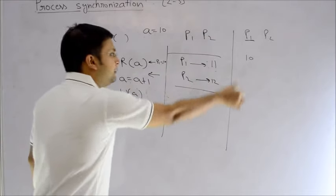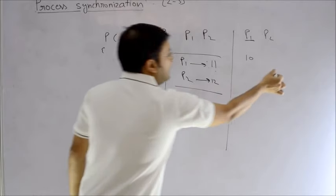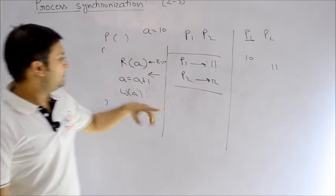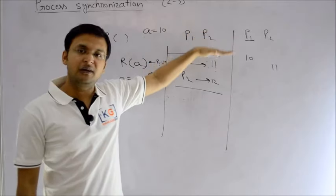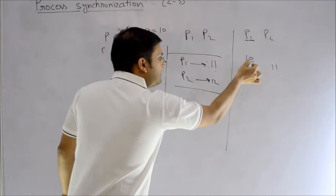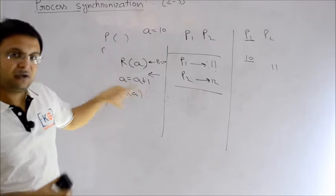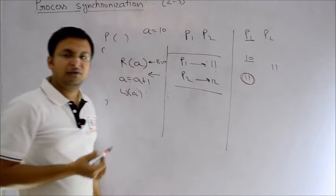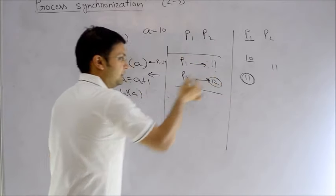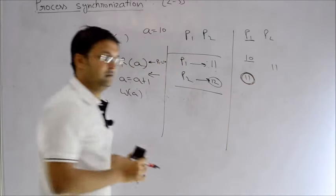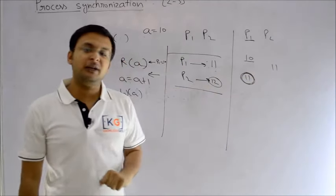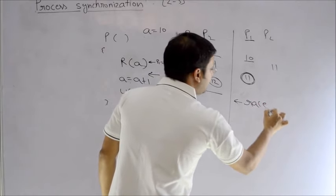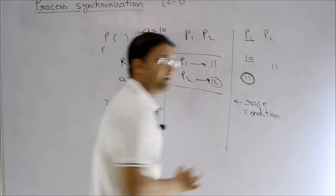After P2 executes, P1 gets charge again. P1 starts from the second instruction because the first instruction (read) was already completed. P1 had read 10, so it makes it 11 and rewrites 11. The final value the system gives us is 11. That is a problem — if we execute them one by one the value becomes 12, but when run in a mixed fashion the value becomes 11. This incorrect result is the issue.